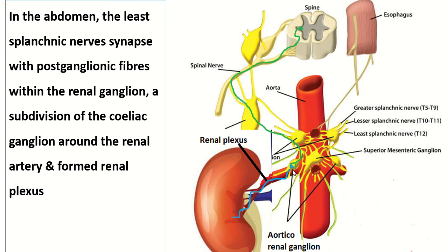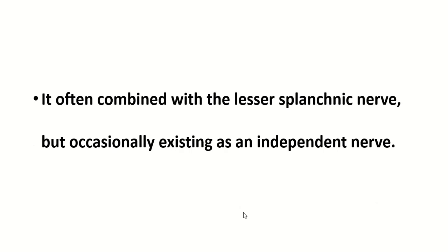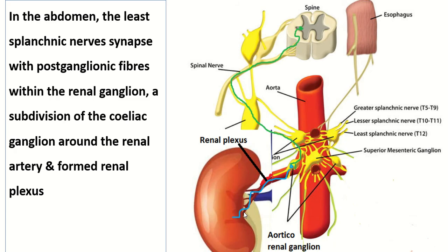The least splanchnic nerve synapses with the postganglionic neuron present in the renal ganglion. The renal ganglion, also called the aorticorenal ganglion, is part of the celiac ganglion. The postganglionic fiber then forms the renal plexus, which is distributed along the renal artery.